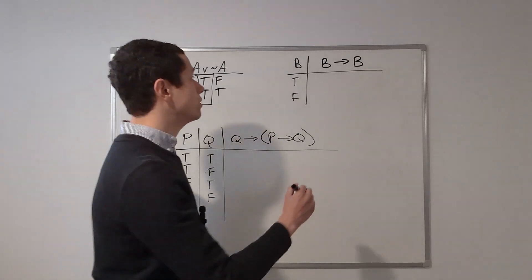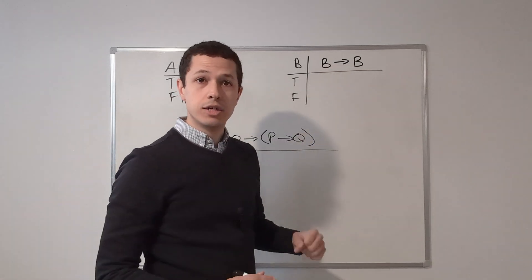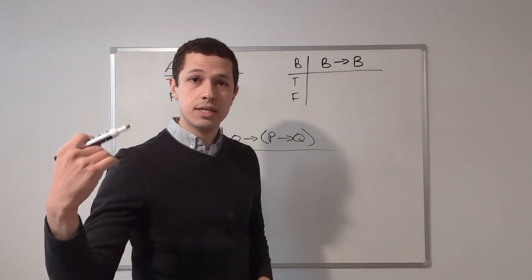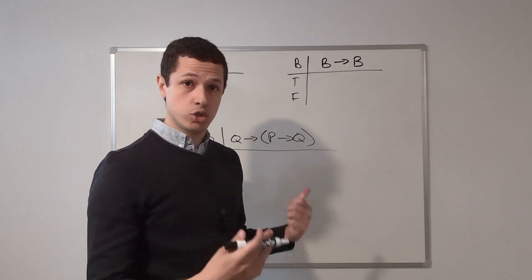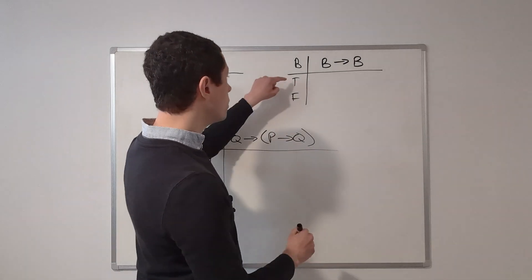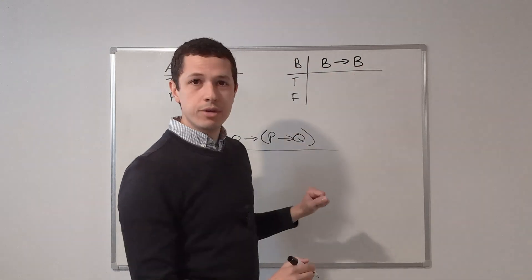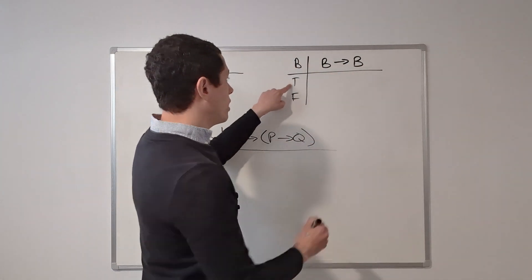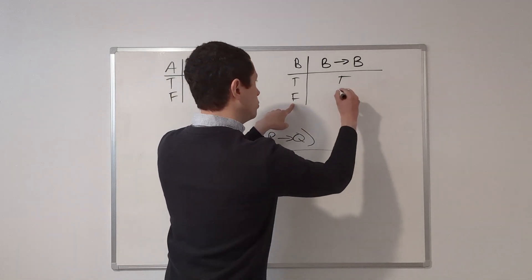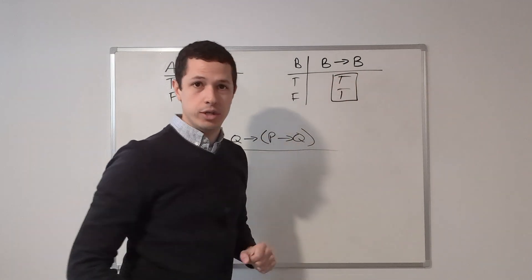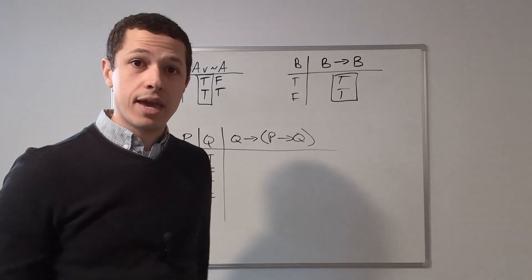Let's just jump right into the next one. So remember, a conditional is false when the antecedent is true and the consequent is false. Otherwise, the conditional is true. So it's true for every other combination. Well, here we just have B implies B. True implies true. That's true. False implies false. That's true. Every single row is true. Therefore, we have a tautology.